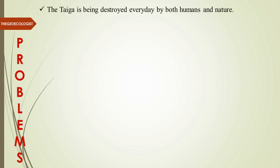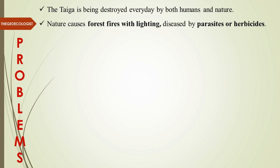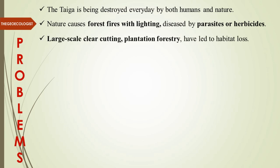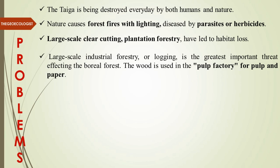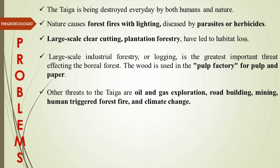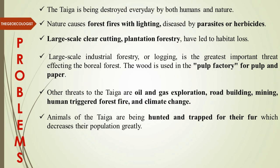The Taiga is being destroyed every day by both humans and nature. Natural causes include forest fires from lightning, and diseases from parasites and herbicides. Large-scale clear-cutting and plantation forestry are leading to habitat loss. The booming pulp and paper industry is a major driver of forest clearing. Oil and gas exploration, road building, mining activities, and other infrastructure development are also posing serious threats to this biome.